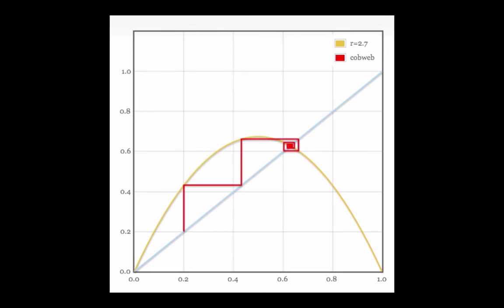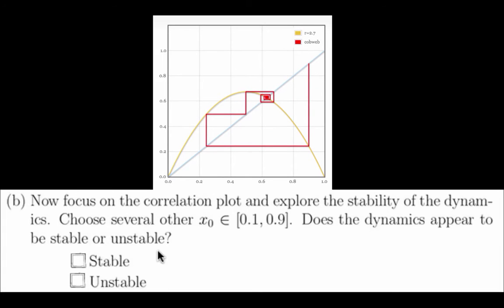0.1, 0.2, 0.3, 0.4, 0.6, 0.7, 0.8. So it does appear that these fixed point dynamics are indeed stable for r equals 2.7.